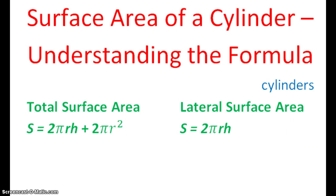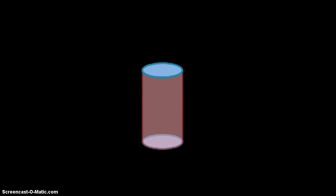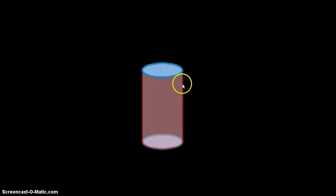What I want us to do is go ahead and look at a cylinder. So we have a cylinder here. It has two circular bases, and then it has this distance right here, which is the height.